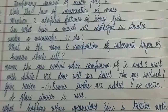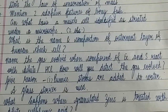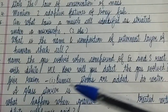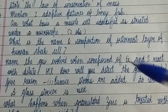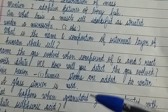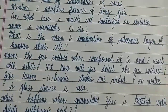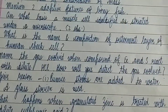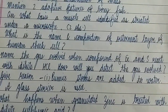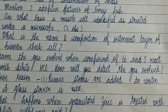Seventh question — very important and likely to be asked for sure: Name the gas evolved when a compound of iron and sulfur reacts with dilute hydrochloric acid. How will you detect the gas evolved? You have to learn all your observations and results from your Chemistry second chapter activity.